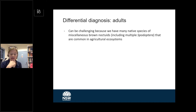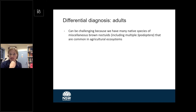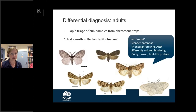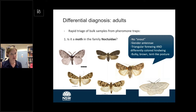Adult identification can be challenging with fall armyworm and other noctuid moths. They're all a bunch of generic-looking brown moths, and we have many native Spodoptera already — that's the genus that fall armyworms belong to. So we already have a lot of their close relatives here in Australia, and they're very common in agricultural systems. When you're triaging moths from bulk traps, the first thing you want to know is whether it's a moth in the family Noctuidae. If it's not, you can throw it away.